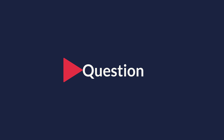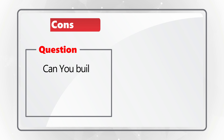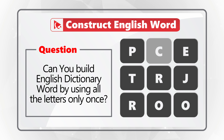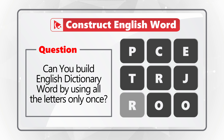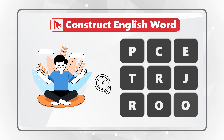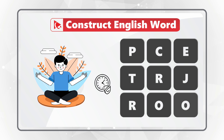Here is an exceptional question to test your knowledge of English. You need to build an English alphabet word, and you are presented with 9 different letters: P, C, E, T, R, J, R, O, O. Take a close look to see if you can come up with the word — give yourself 10 to 15 seconds, which is about as much time as you get on the real test.